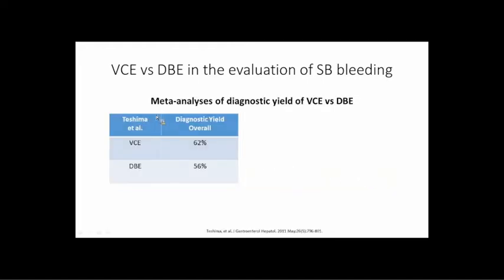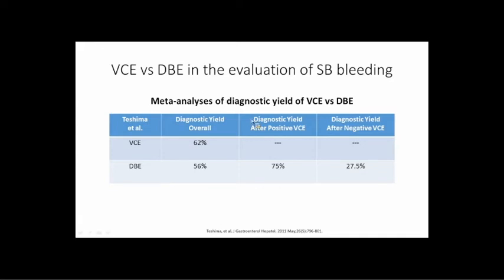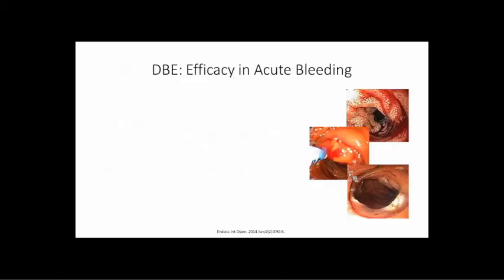Comparing capsule to enteroscopy for diagnostic yield, three large studies show almost identical diagnostic yields for both. But looking more closely at the latest study — with yields of 62% and 56% respectively — when they sorted patients by whether they first had a positive or negative capsule, the diagnostic yield of enteroscopy went up dramatically. A patient who had a positive capsule then proceeded to enteroscopy had a 75% yield for a treatable lesion, whereas after a negative capsule, enteroscopy still finds something about 25% of the time but much less often.